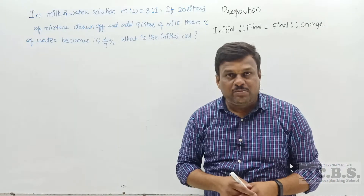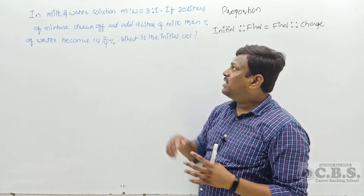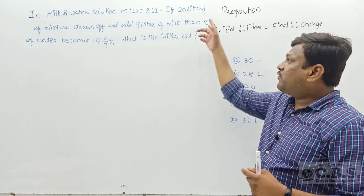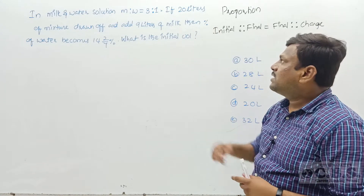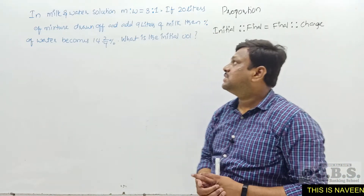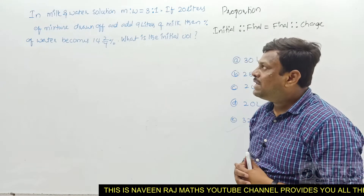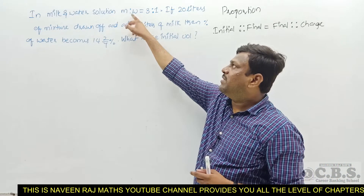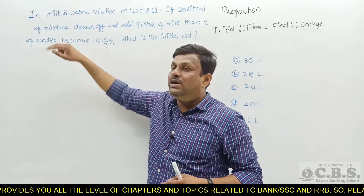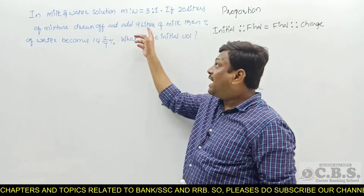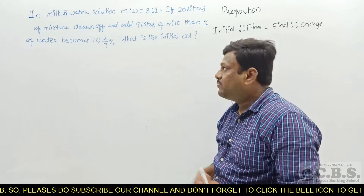Let's go for the previous year memory-based question. In a milk and water solution, the ratio of milk and water is 3 is to 1. If 20 liters of mixture is drawn off and 9 liters of milk is added, then the percentage of water becomes 14 and 2/7 percent. What is the initial volume of the container?